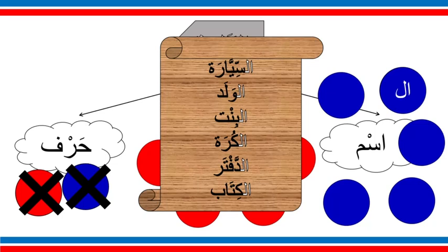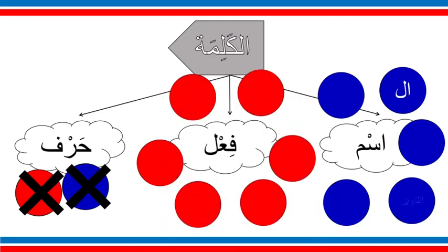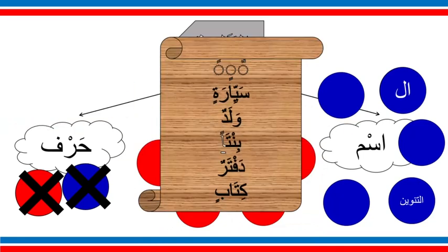Al-alama al-thaniya — the second sign of ism is tanwin, the double haraka or the n-sound, as we learned before. For example: sayyaratun, waladun, bintun. Remember in tanwin we also have daftarun and kitabin. If a word accepts tanwin, the double haraka, it is ism.